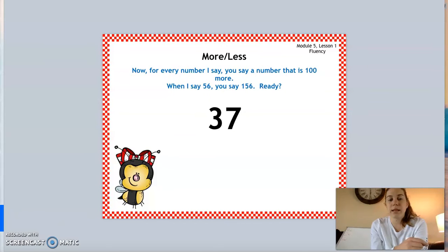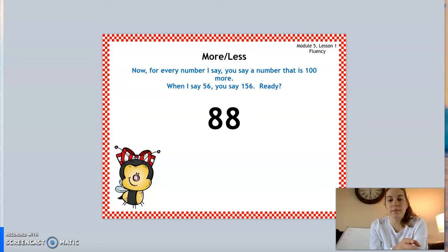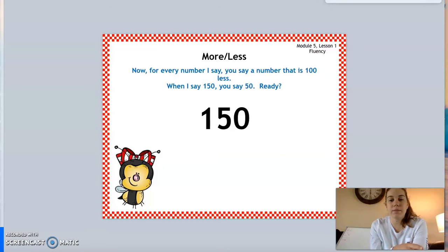Now we're going to do 100 more. Ready? 37 — good, 137. 8 — good, 108. 88 — good, 188. Now I want you to do 100 less. Ready? 150 — good, 50. 159 — good, 59. 170 — good, 70.